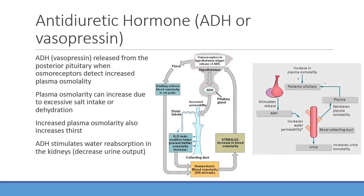Antidiuretic hormone (ADH) normally increases blood volume. It works mainly by placing aquaporin channels in the collecting ducts of the kidneys, increasing water reabsorption. With increased ADH, urine production decreases or urine becomes more concentrated, because more water is being reabsorbed back into the blood.